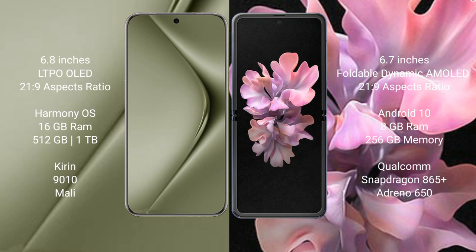The Huawei Pura 70 Ultra uses 16GB RAM with 512GB or 1TB internal storage, powered by the Kirin 9010 processor with a Mali GPU. The Samsung Galaxy Z Flip 8 comes with 8GB RAM and 256GB internal storage.